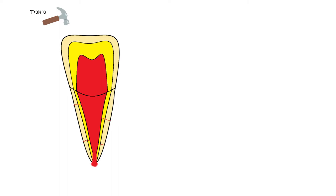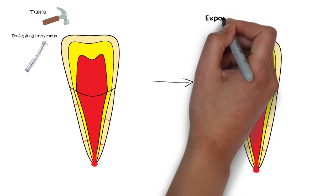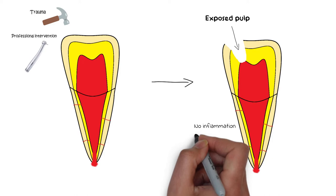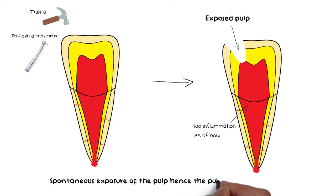On the other hand, in the case of direct pulpal exposure — such as during any kind of trauma or during a professional intervention by a dentist — the exposure of the pulp to the outside environment is more or less spontaneous and doesn't have a long-standing lesion associated with it as was the case with caries. Therefore, only a few bacteria gain access to the pulp, and the pulpal reaction to the two types of exposure is wildly different. The pulp in some of these direct exposure cases can even be saved using techniques such as direct pulp capping or pulpotomy, preserving the vitality of the pulp.